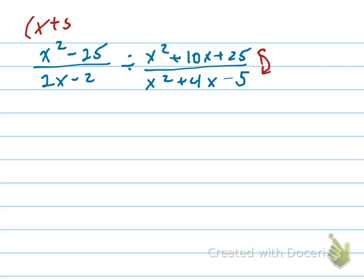This is going to be x plus 5, x minus 5. Difference of perfect squares. A 2 is going to come out of here. Right here, it's going to be an x plus 5 and an x plus 5.